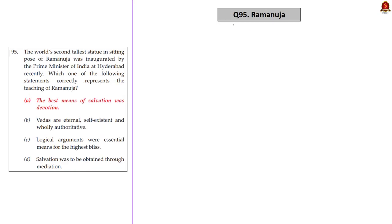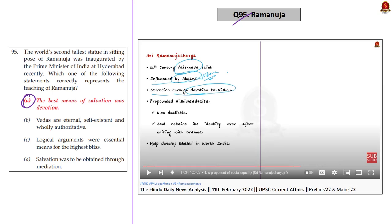Question 95 is about Ramanuja, asking which statement correctly represents his teachings. We discussed this in our daily news analysis on February 11, 2022. The correct answer is option A — the best means of salvation was devotion. Since Ramanuja made news several times, the question was asked. If you watched the February 11, 2022 analysis, you could have accurately answered this straightforward question.